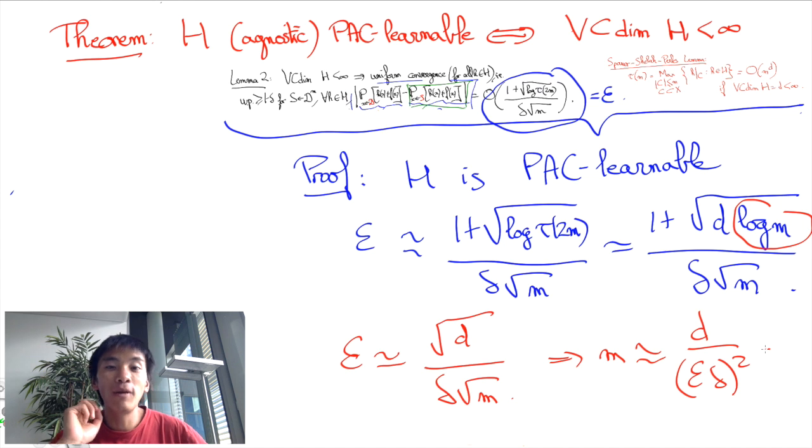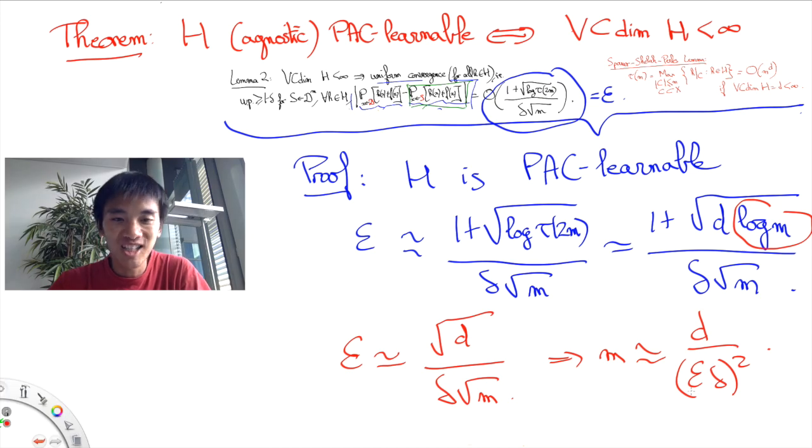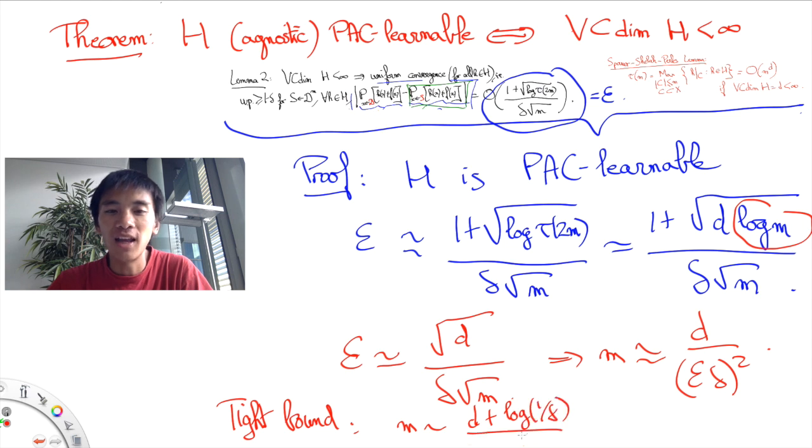Evidently, I have been very approximate here with the explanations and much more details are required, but they are beyond the scope of this video. Besides, I should add that a much better bound, especially with respect to delta, can be achieved as the optimal sample complexity is of the order D plus log of 1 over delta divided by epsilon squared.